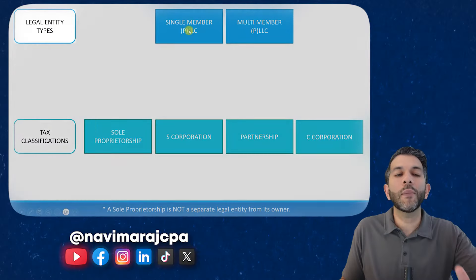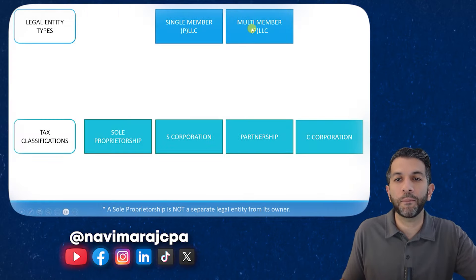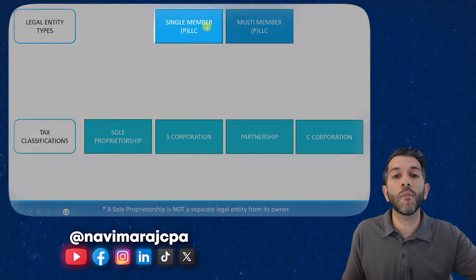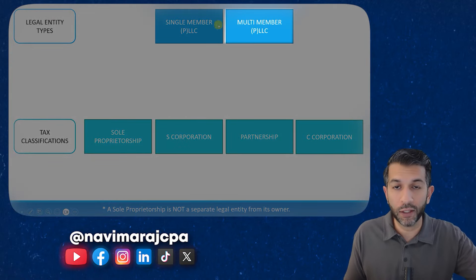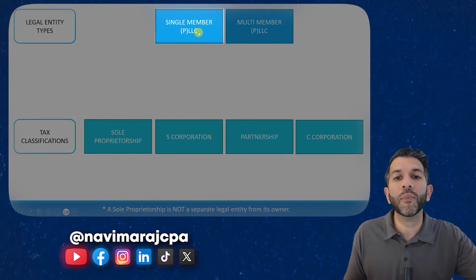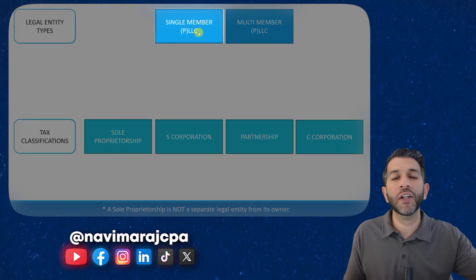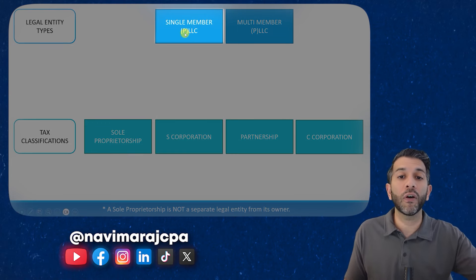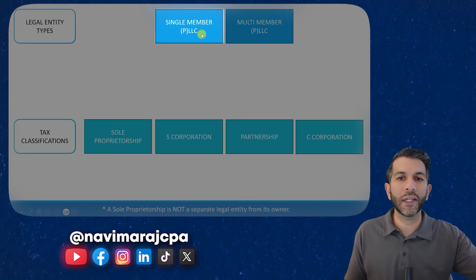Let me quickly show you what I mean by legal entity types and tax classifications. We've got legal entity types across the top, focusing on LLCs here. You can either form a single member LLC or a multi-member LLC. You see this 'P' here for PLLC — that means in some states, if you have a professional license, maybe you're an accountant, attorney, or medical physician, you might need to establish a professional limited liability company.